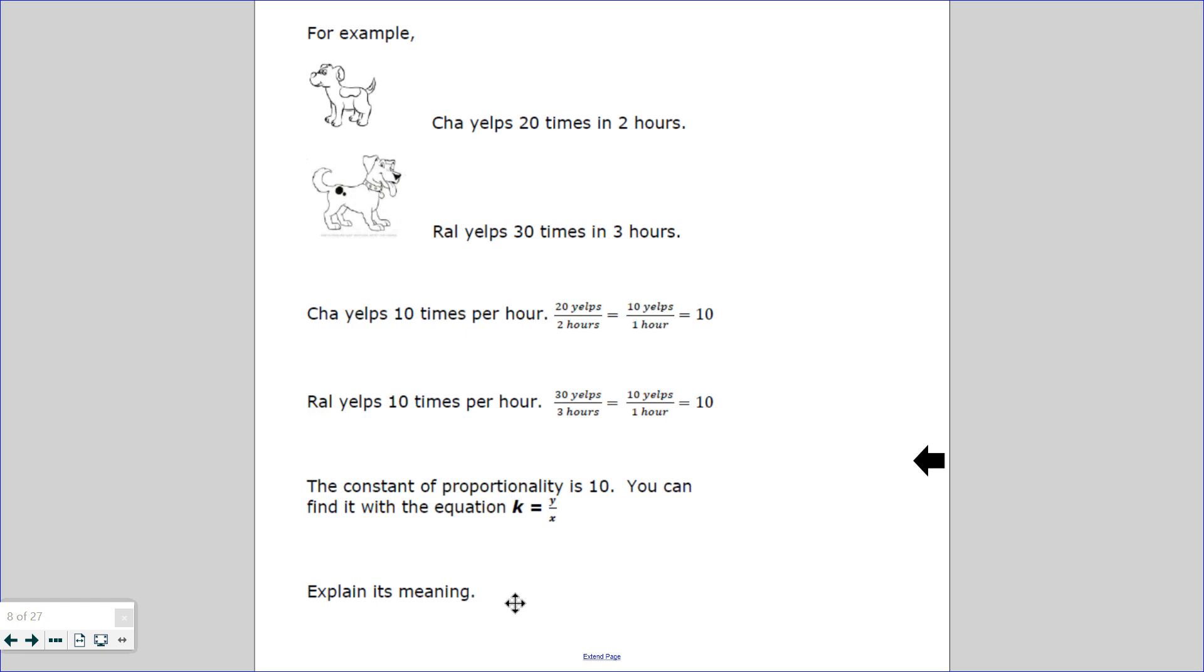So for example, here is an example. Cha yelps 20 times in 2 hours. Proud yelps 30 times in 3 hours. Cha yelps 10 times per hour, and your brow yelps 10 times per hour. So if we do the mathematics here, as you can see, 20 divided by 2 is 10, and 30 divided by 3 is 10. That means the constant of proportionality is 10. That means the dogs bark 10 times per minute.